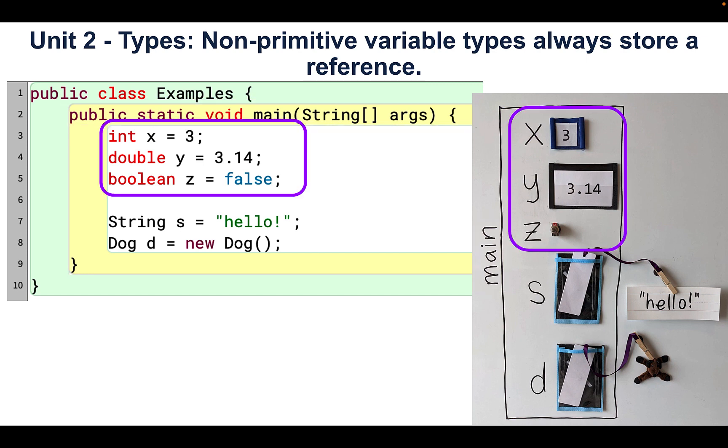Our code creates three primitive variables, x, y, and z. x is a variable of type int, which means it stores numbers without a decimal point, or integers.